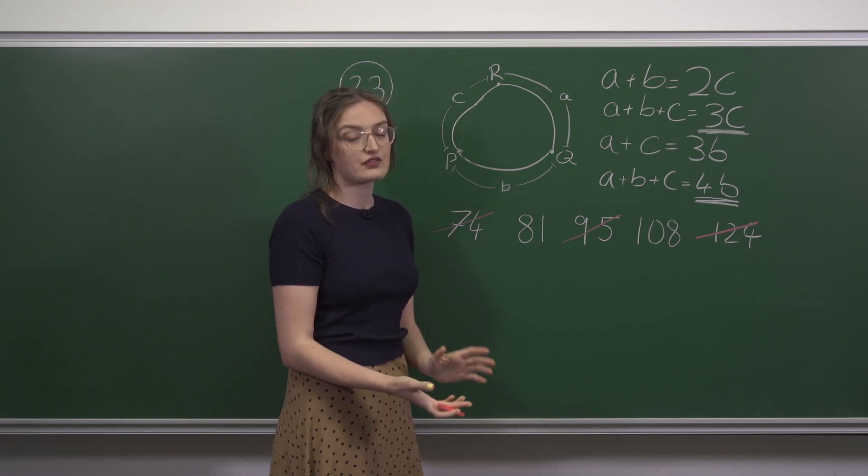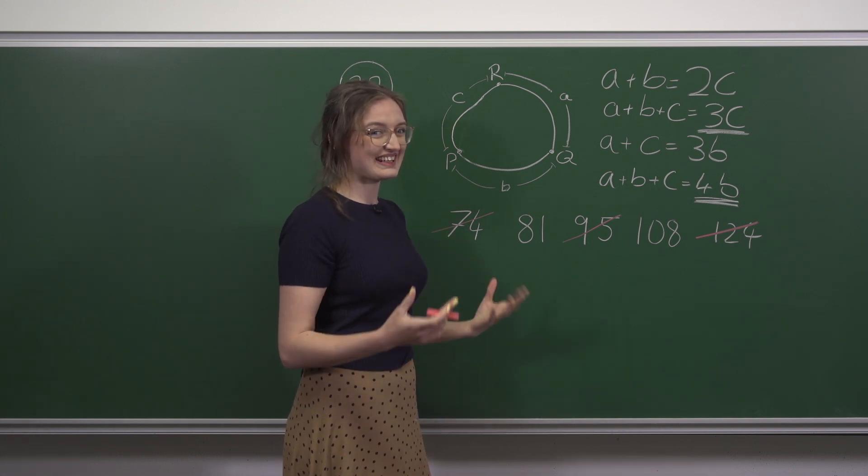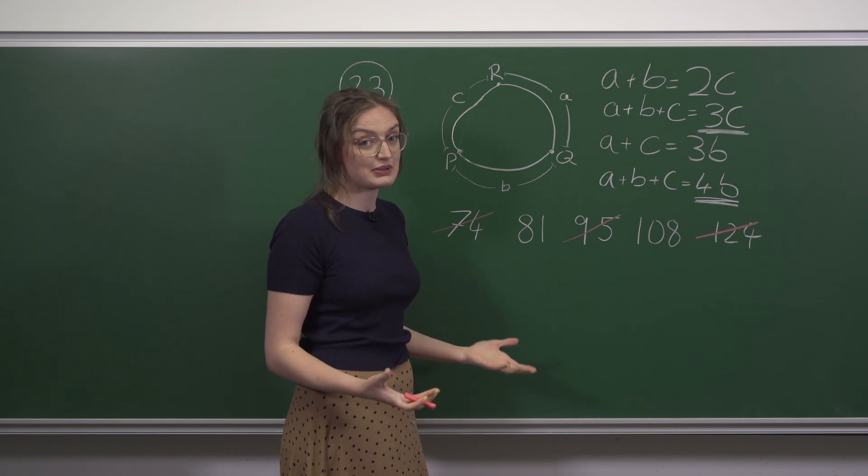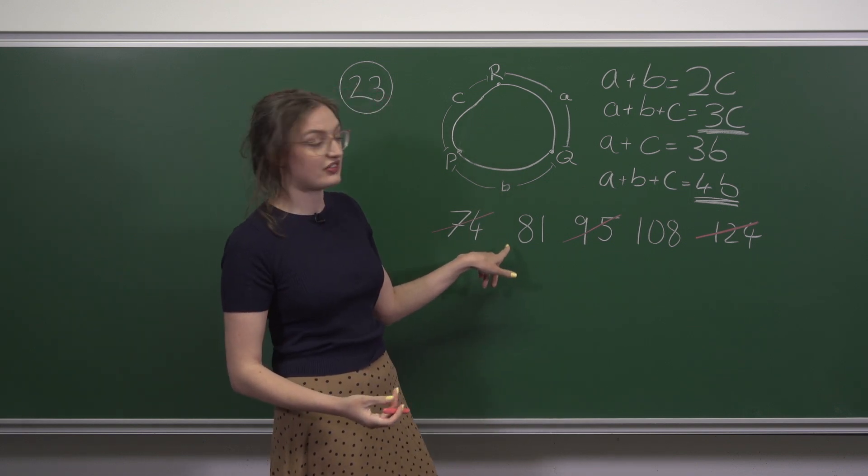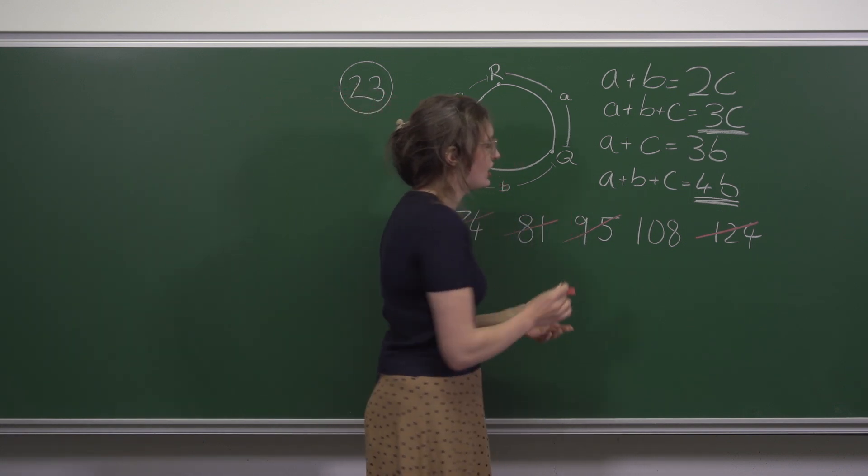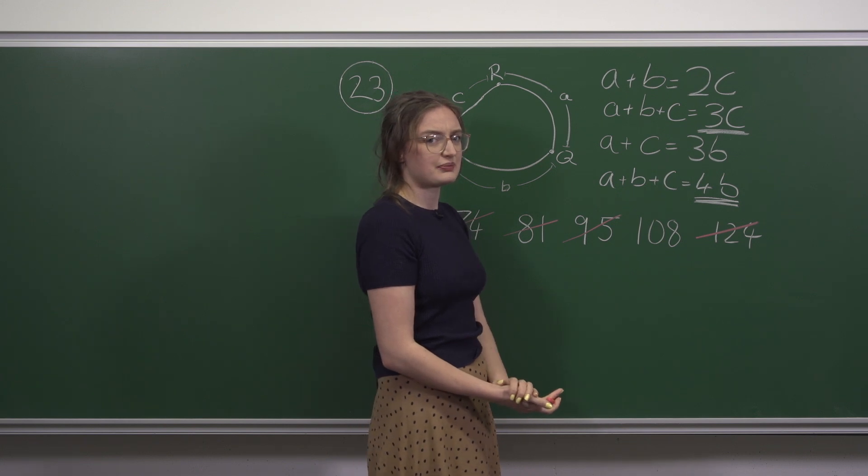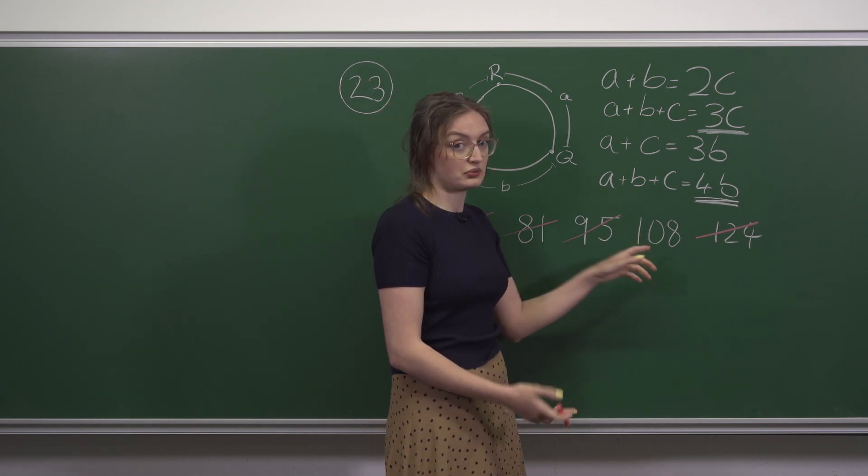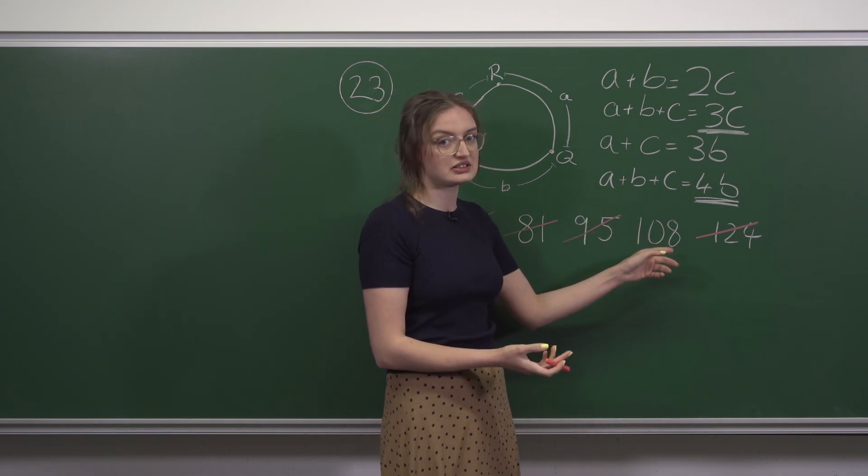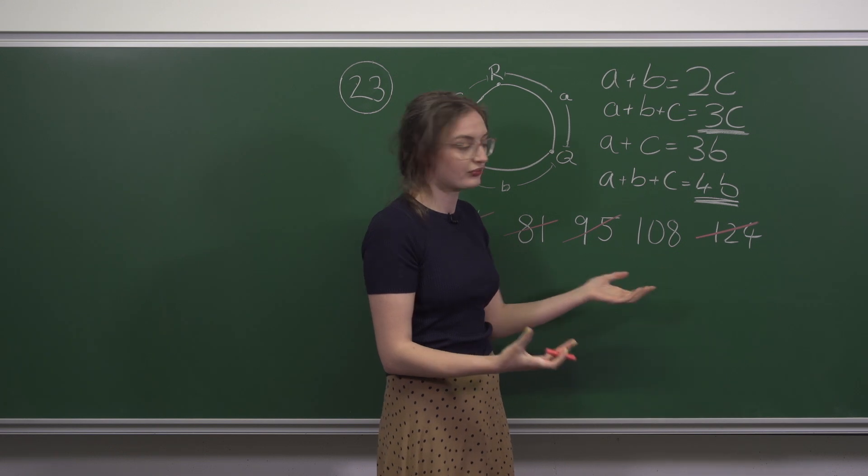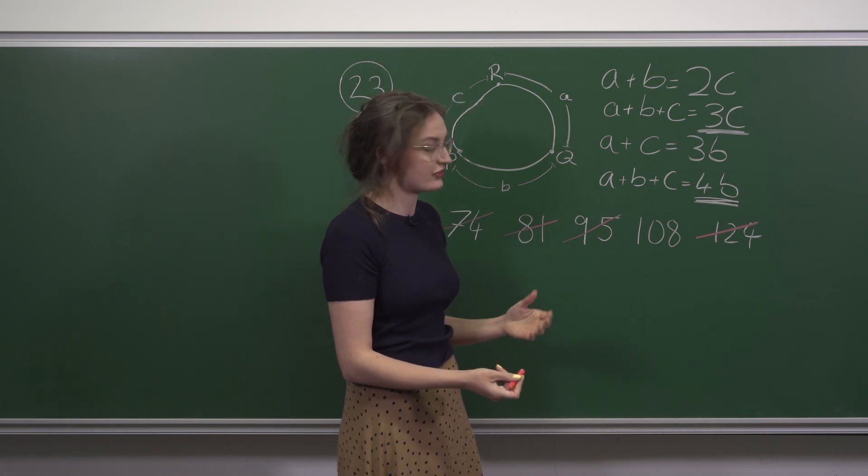Now we can check for divisible by 4. Well anything that's a multiple of 4 has to be an even number. So we can get rid of 81 immediately. What about 108? Well it's 100 which is a multiple of 4 plus 8 which is also a multiple of 4. So 108 is a multiple of 4.